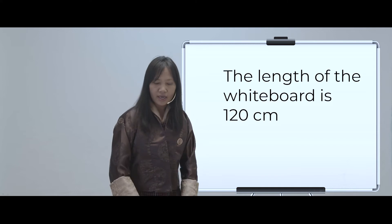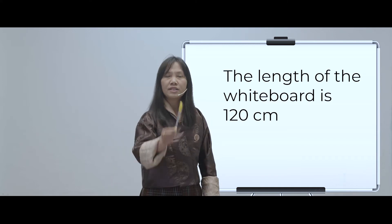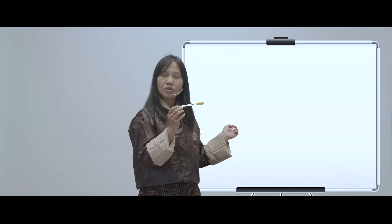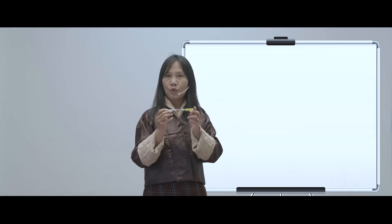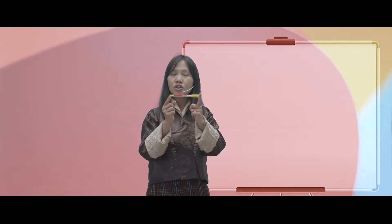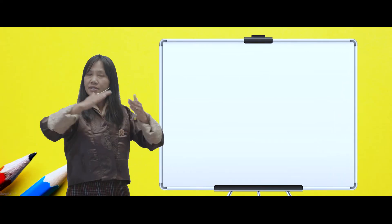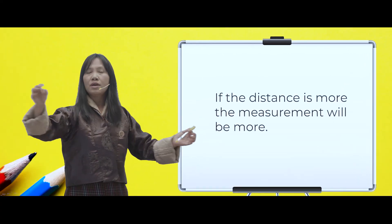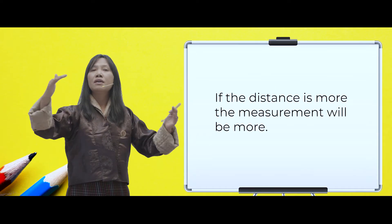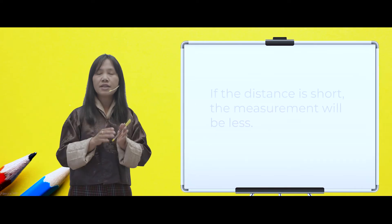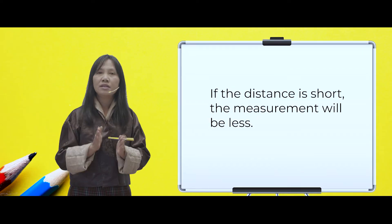Now look at the length of this pen. Do you think this pen will have the same measurement as the whiteboard? No — it is shorter, so it will measure less. Remember: if the distance is more, the measurement will be more; if the distance is short, the measurement will be less.